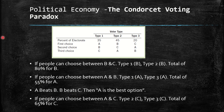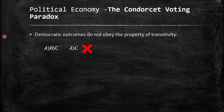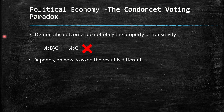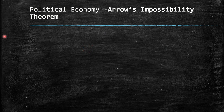This is what we call the Condorcet voting paradox. What we can conclude is that democratic outcomes do not obey the property of transitivity. A is preferred to B, B is preferred to C, but A is not preferred to C. Depending on how the question is asked, the result is different. Therefore, majority vote by itself does not tell us what outcome a society really wants. This leads us to Arrow's impossibility theorem.